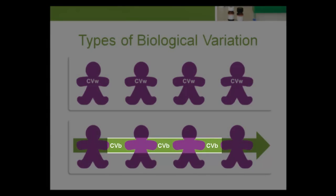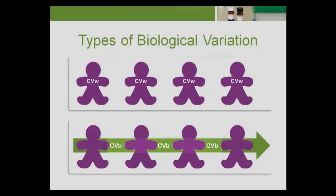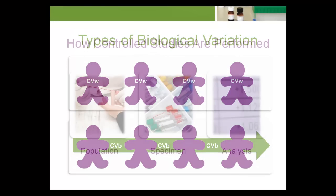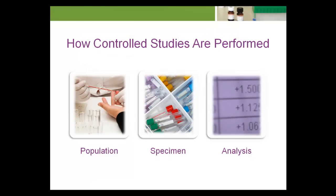Use CVB to express between-subject biological variation. CV is the coefficient of variation, and the B indicates between-subjects. Between-subject refers to the variation between the homeostatic setting points of individuals.